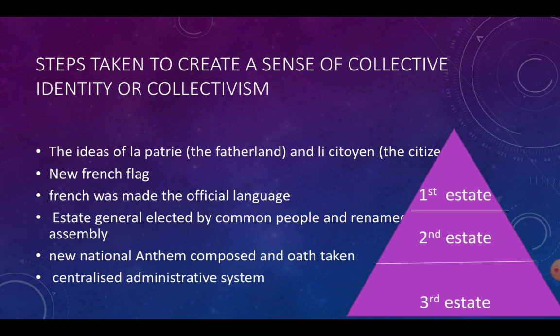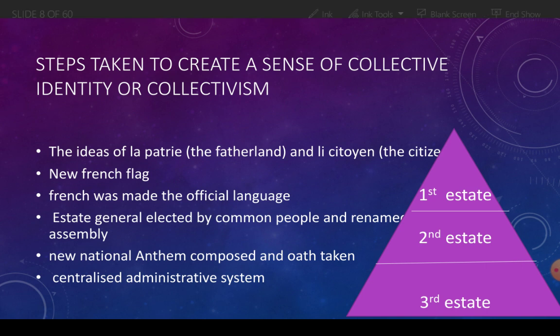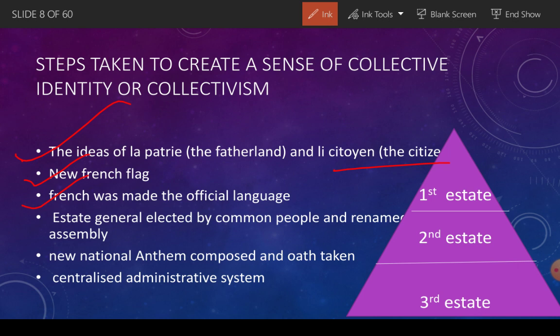Jab French Revolution hua aur France mein democracy establish ho gayi, toh wahaan par kuch steps uthaaye gaye taaki jo log hain woh collective mehsoos kar sakein, ek doosre se jude hua mehsoos kar sakein. Unmein sabse pehle wahaan ka fatherland yaani 'la patrie' aur 'les citoyens' - yaani France hi hamaari pitrabhoomi hai aur hum iske citizen hain - yeh concept aaya. Naya French flag banaaya gaya, French language ko wahaan ki official language bana diya gaya. Jo Estates General thi common people ki, usko hataakar National Assembly ghoshit kar diya gaya. Ek national anthem compose kiya gaya, nayi nayi oaths li jaane laggi, aur jo centralized administrative system tha - first estate, second estate, third estate - usko bhi khatam kar diya.